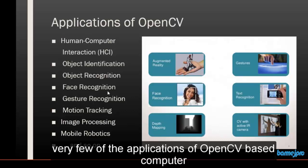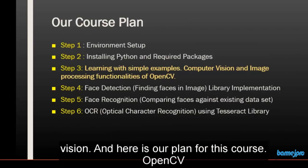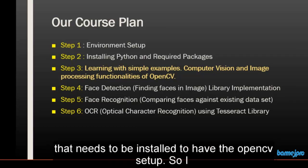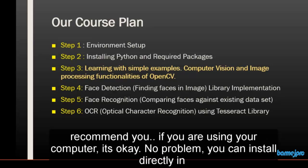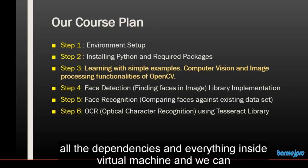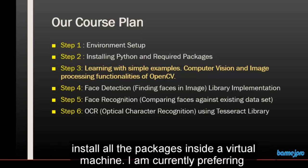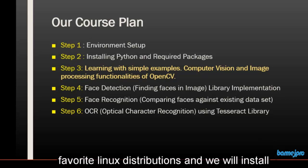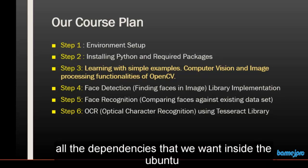These are just a few of the applications of OpenCV-based computer vision. Here is our plan for this course. OpenCV is a dependency-based process — we need multiple scientific libraries installed to set up OpenCV. I recommend using a virtual machine to keep all the dependencies in one place. I'm currently preferring Ubuntu Linux as our virtual machine, as it's one of my favorite Linux distributions. We will install all the dependencies we need inside the Ubuntu virtual machine.